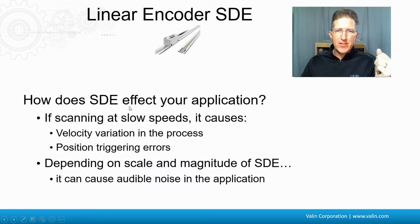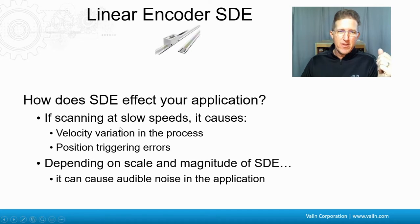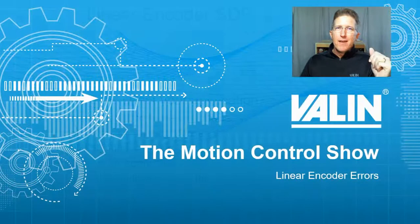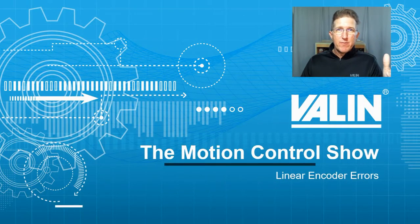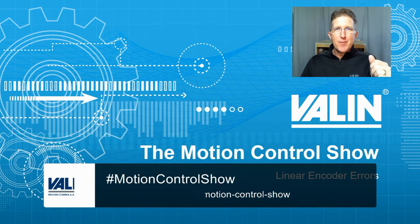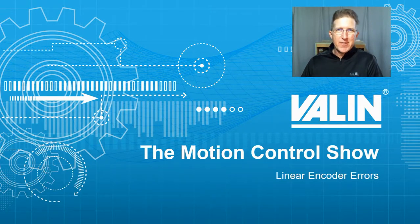So how does the SDE affect your application? If you're scanning at slow speeds, it causes some velocity variation, also known as velocity ripple. It can also cause some position triggering errors. And depending upon the scale and magnitude of the SDE, it can cause some audible noise in the application. If you like what you're learning and want to learn more, be sure to follow my hashtag motion control show. I'm Corey Foster at Valen Corporation. I hope this helps.